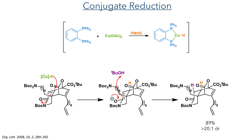With this electron-withdrawing amide in place, they could then carry out a conjugate reduction. Bis-diphenylphosphinobenzene reacts with copper acetate in the presence of polymethylhydrosilane to form a copper hydride species. This is a soft nucleophile and preferentially adds to the beta position of the unsaturated amide, forming an enolate-type intermediate that is then protonated by tert-butanol. This formed the target compound in an 89% yield with a greater than 20:1 dr.